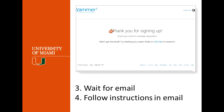You will get a 'Thank you for signing up' notice — check your email to complete registration. Wait for the email and follow the instructions, because that's what proves you're part of the University of Miami. If you enter an @med.miami.edu address, you'll be part of that network, not the miami.edu network. So get your alias set up, make sure it's working by sending an email to it, then sign up for Yammer and follow the instructions — they'll have you click a link and set a password.